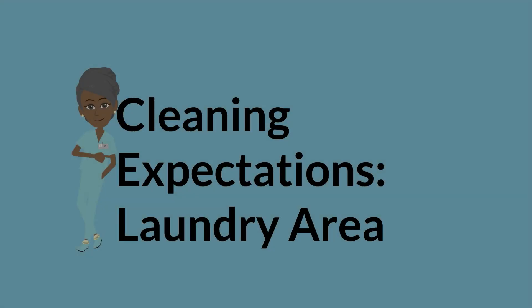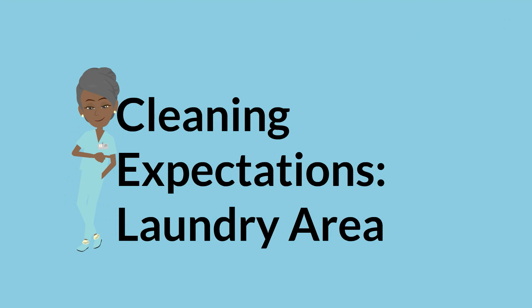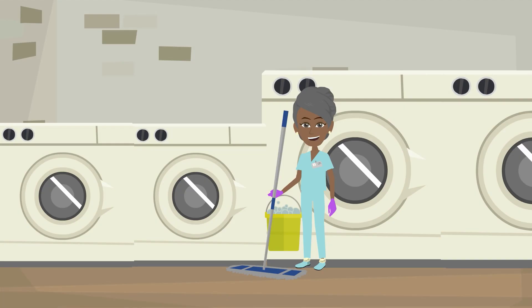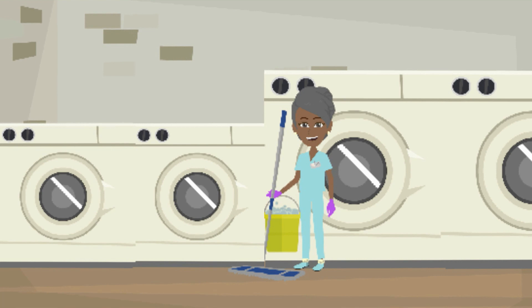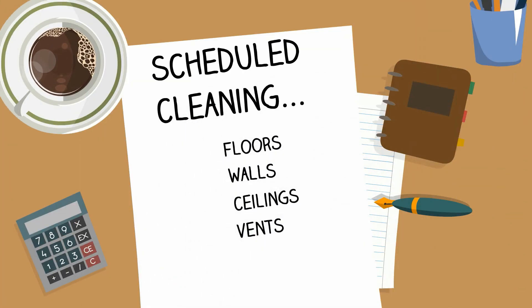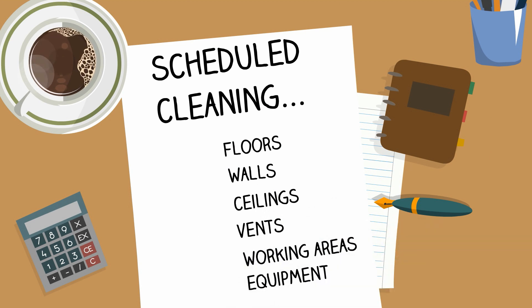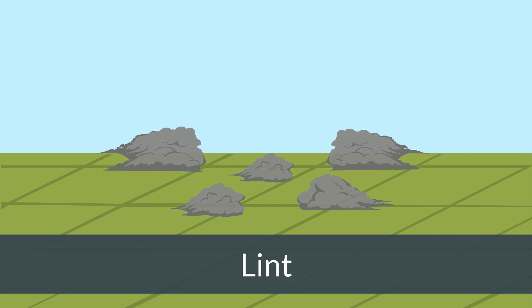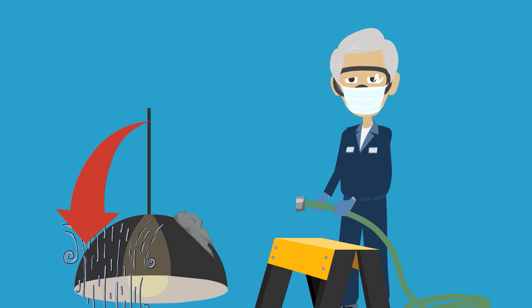Environmental cleaning of the laundry processing facility is a basic infection control requirement. Schedule regular cleaning of the physical environment, including floors, walls, ceilings, vents, working areas, and installed equipment. Lint is both an infection control hazard and a fire hazard. Use a blow-down process to blow air downward from the ceiling, vents, walls, and equipment to minimize the buildup of lint and dust.